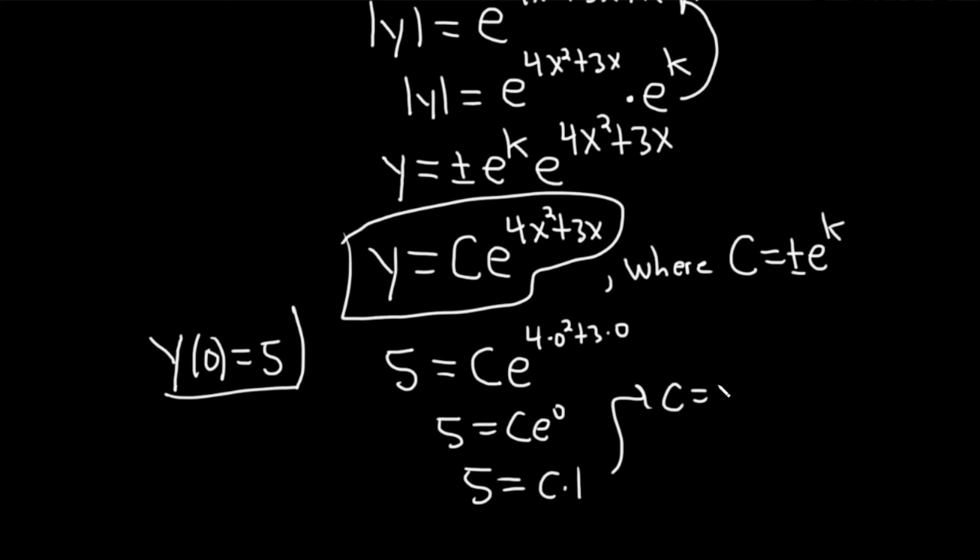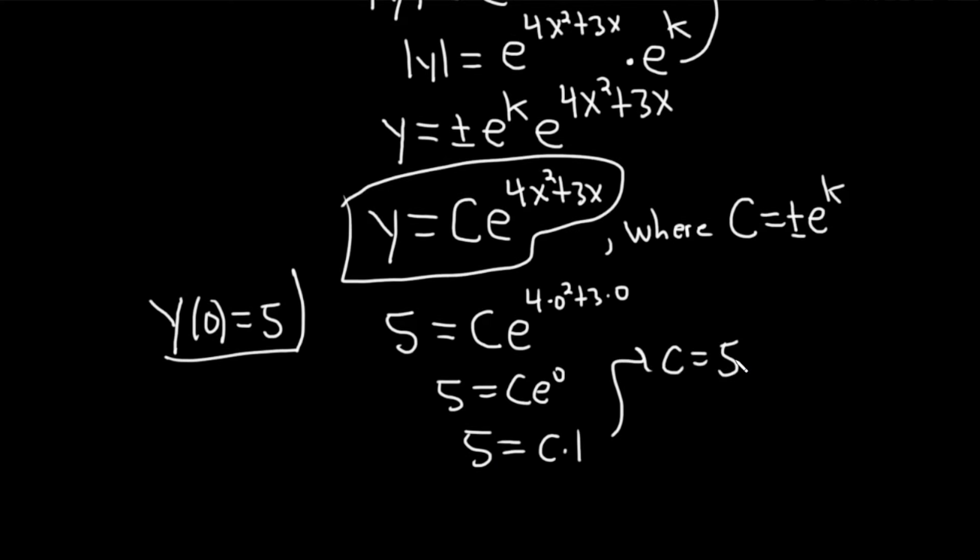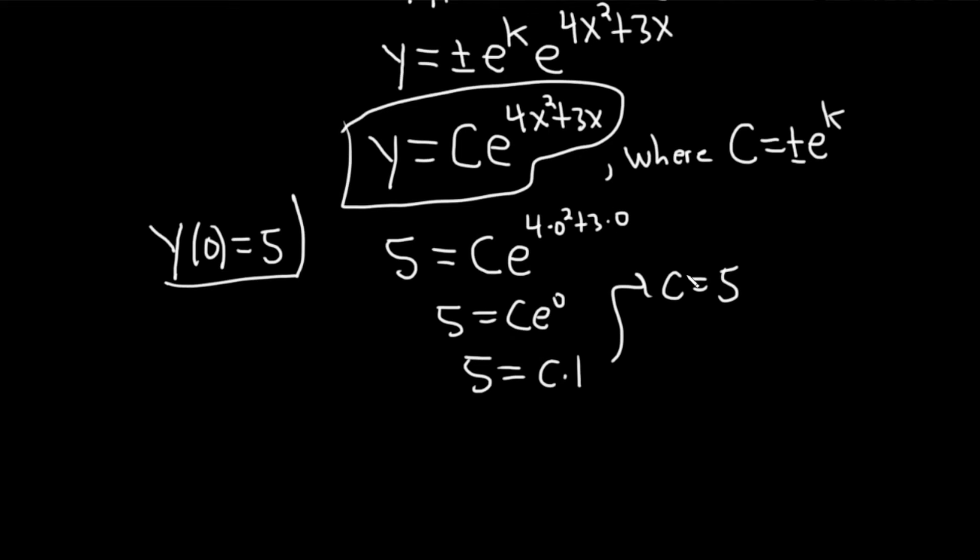Therefore, c is equal to 5. And to finish, you take your 5 and you plug it back into your function. So y is equal to 5 e to the 4x squared plus 3x. And that would be the solution to the initial value problem.